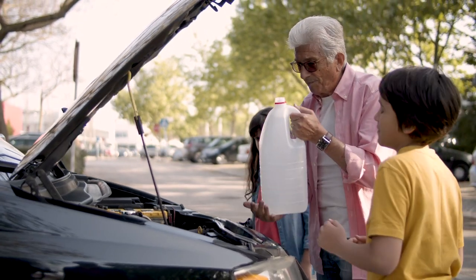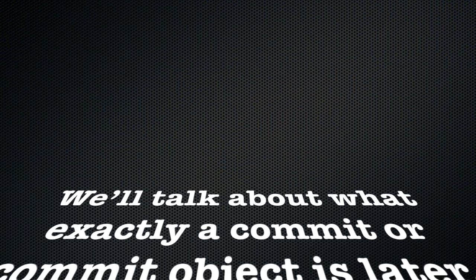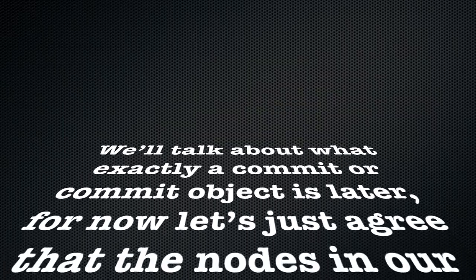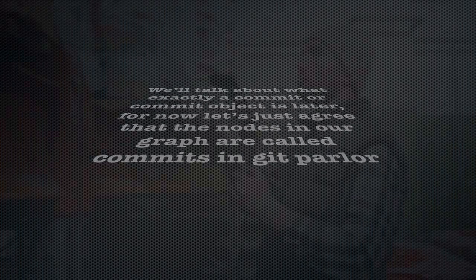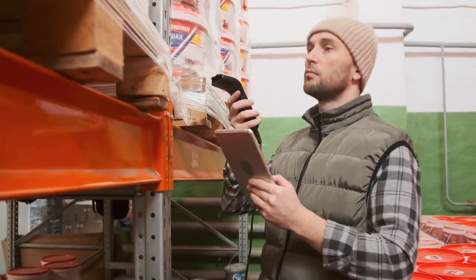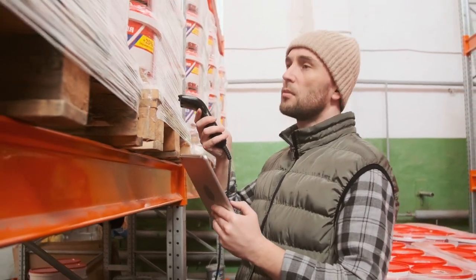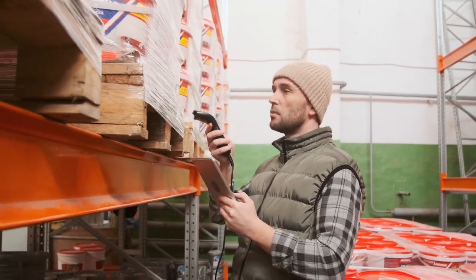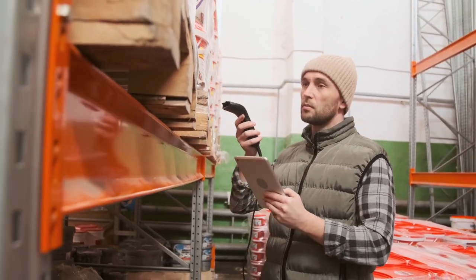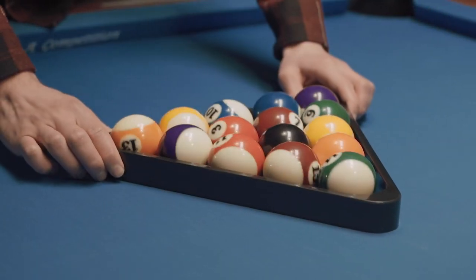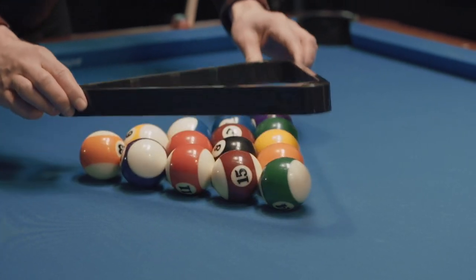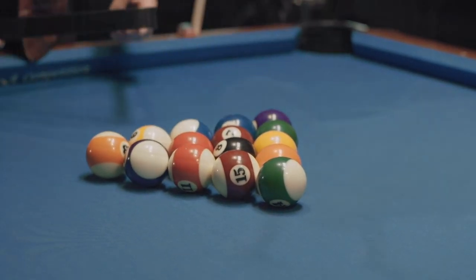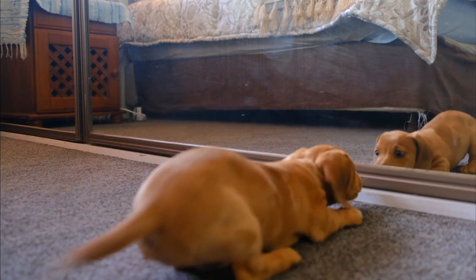Git relies extensively on these checksums, so much so that each commit object — we'll talk about what exactly a commit or commit object is later. For now, let's just agree that the nodes in our graph are called commits in Git parlance. So each commit object has its checksum, and this checksum is used as the commit ID. It uniquely identifies the commit. Because of this checksum, you can never have two commits with the same ID in Git. If you had two commits with the same ID, it means they are identical in every way, and so they are not two commits, but just the same commit.